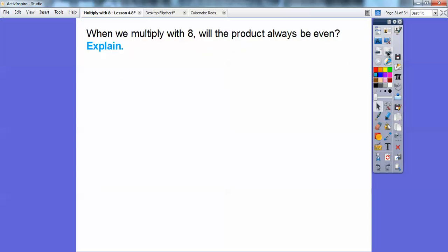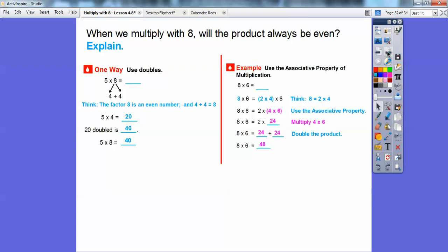So there are all kinds of ways. When we multiply with eight, will the product always be even? Well, look—we used doubles because eight is an even number. We broke eight into 4 + 4, then multiplied 5 × 4 and 5 × 4, and doubled that. With the Associative Property, we took eight and made it 2 × 4, multiplied those, and then doubled.